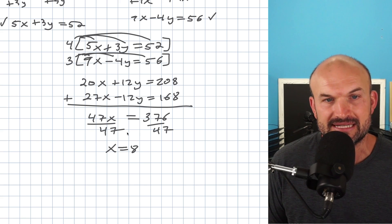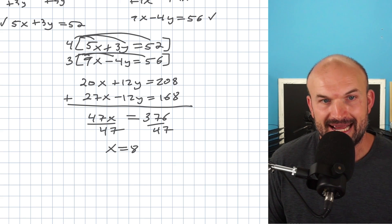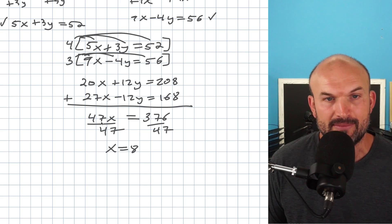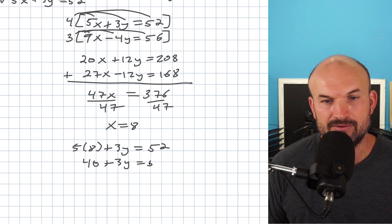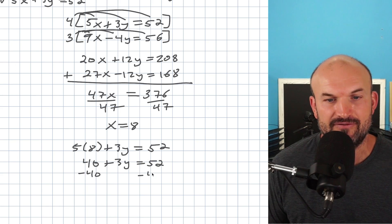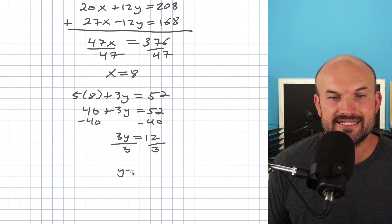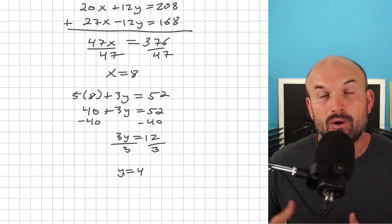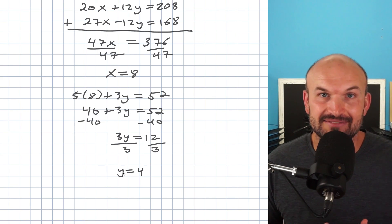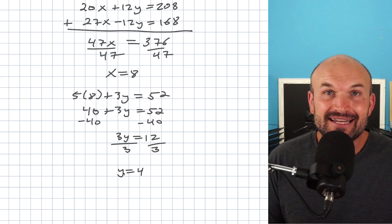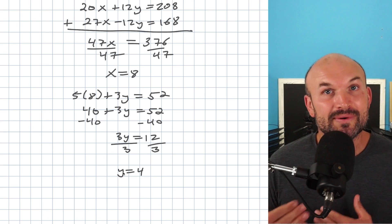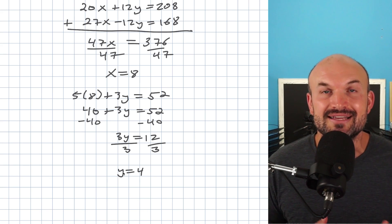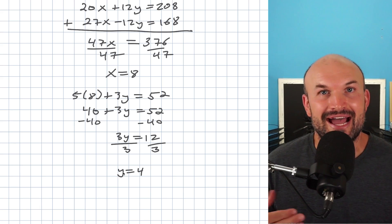I'll pick the top equation since it has no negatives. Replacing x with 8: 5 times 8 is 40, so 40 plus 3y equals 52. Subtracting 40 gives 3y equals 12, and y equals 4. Therefore, when x equals 8 and y equals 4, the simultaneous equations are satisfied. Hopefully you are ready to get that A. If you need a couple more examples, check out the multiple examples down below, or look for more notes and resources in the description. Cheers.